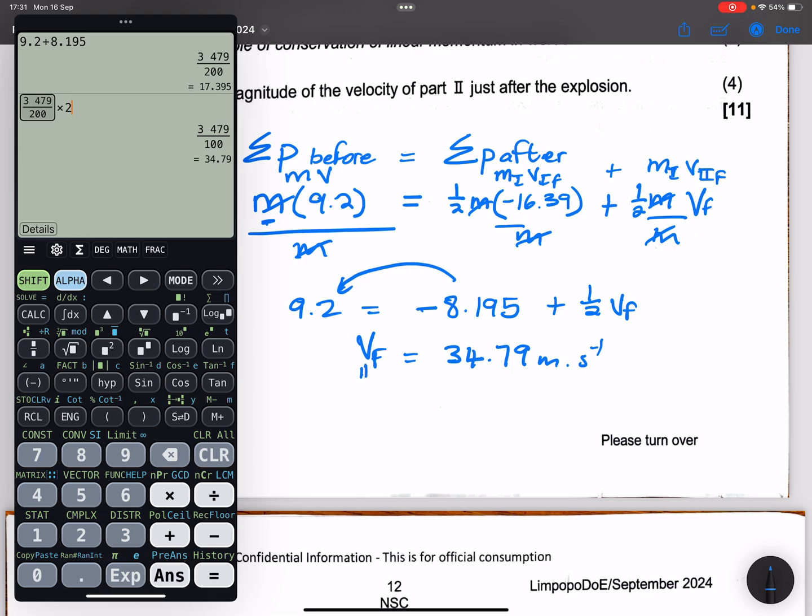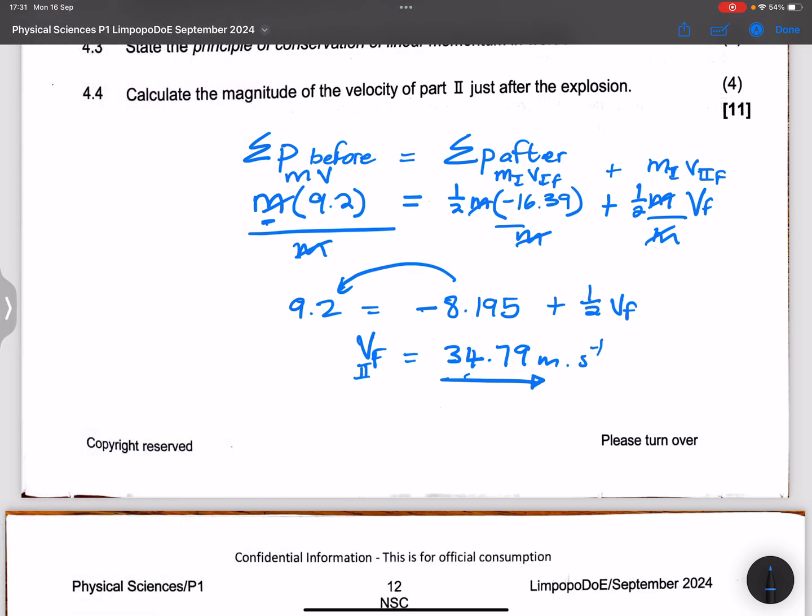So multiplying all of that by 2, so I find that to be 34.79 meters per second.